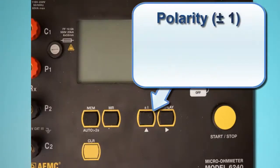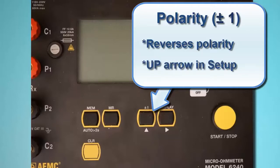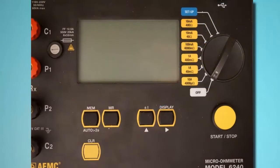The next button to the right is the Polarity button, labeled ±1. This reverses the polarity of the test current and displays the average of the two polarity measurements. This is useful for minimizing the effects of stray DC currents when measuring very low resistances. This button also serves as the up arrow in user configurable screens, such as those displayed in setup mode.